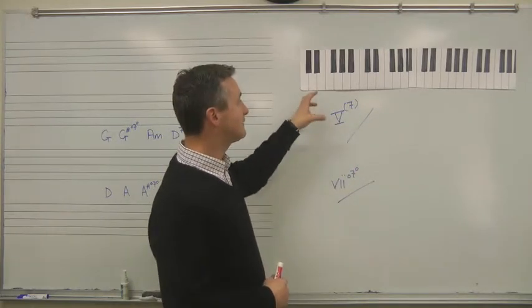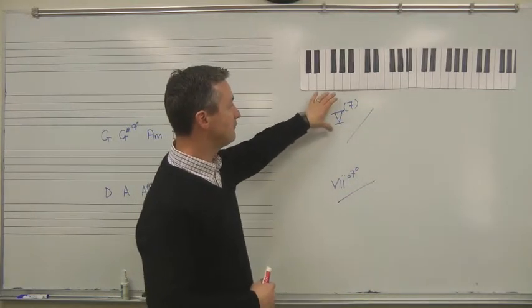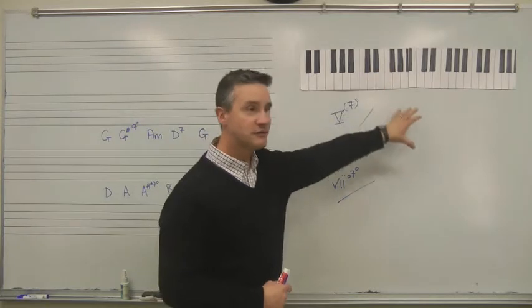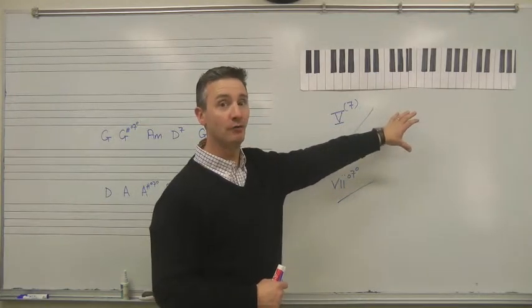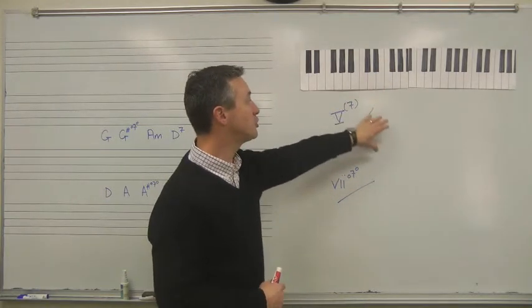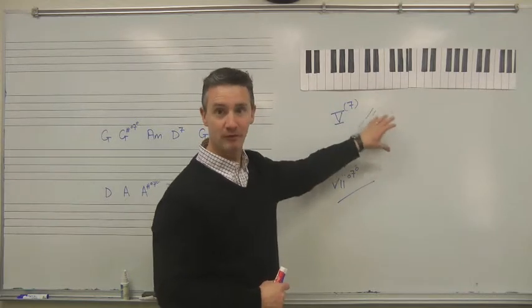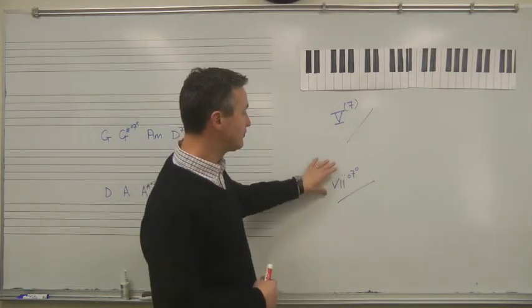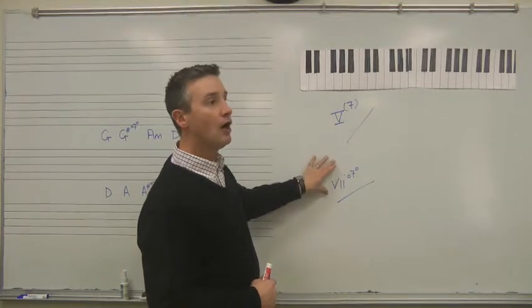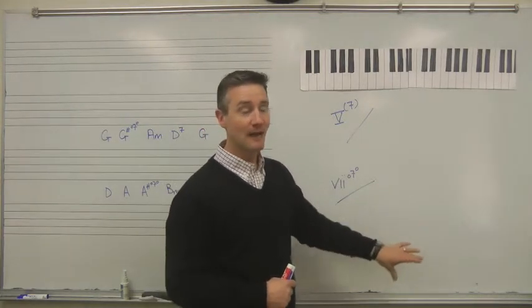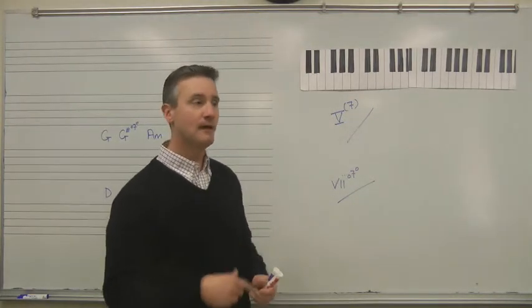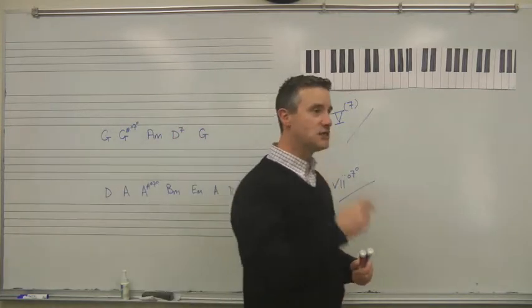And if, therefore, you can have a secondary dominant using the V chord of some other member of the scale, so V of II or V of V or whatever it might be, then it would make sense that you could also do the same with the VII chord of any member of the scale. And this is actually true. What you have to be aware of is the relationship, therefore.